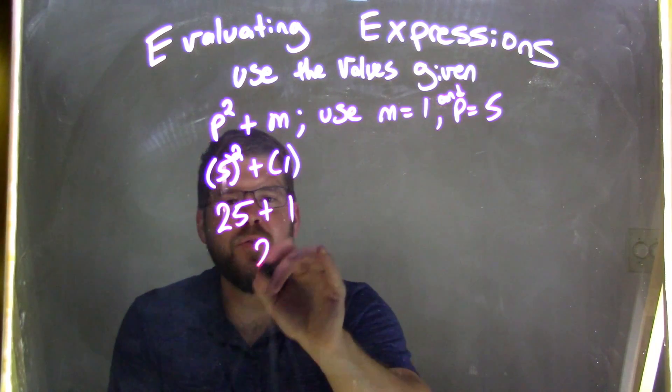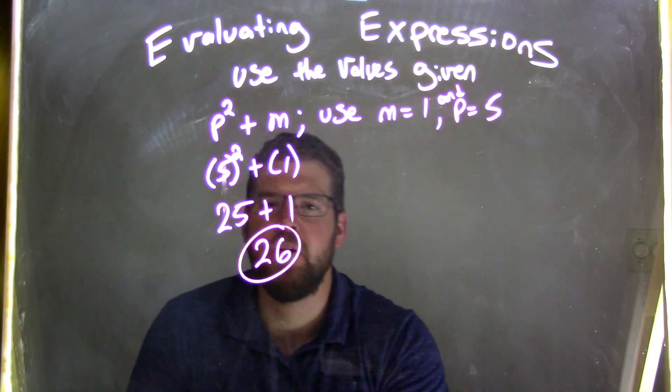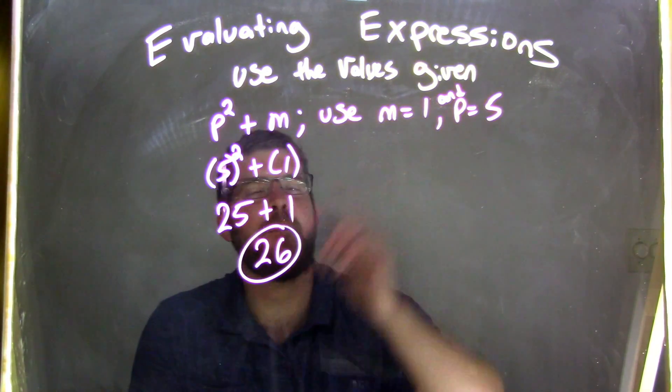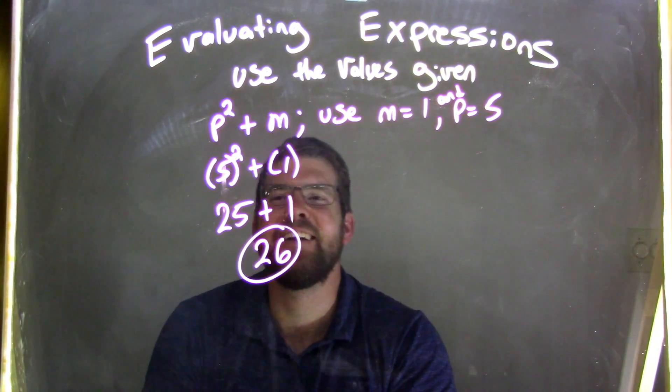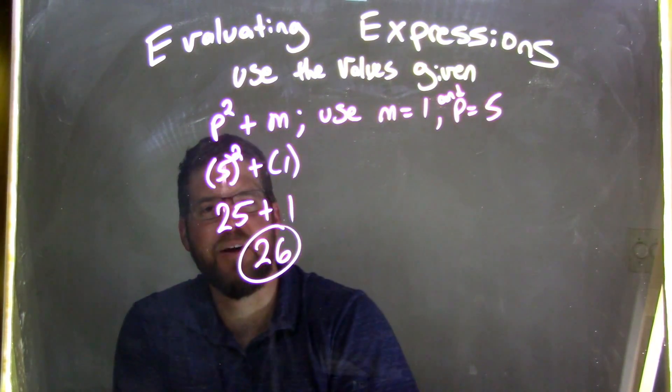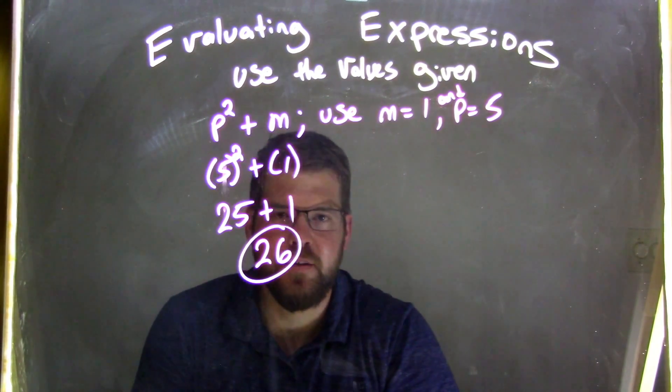So 25 plus 1 is 26, and there we go. So again, we started with p squared plus m. We substituted m to be 1 and p to be 5. So 5 goes right here, and 1 goes right there. 5 squared is 25, plus 1 is 26.